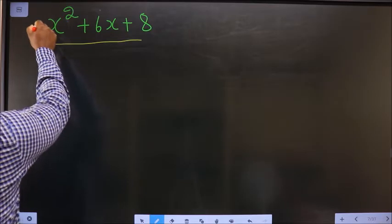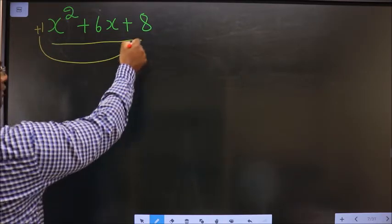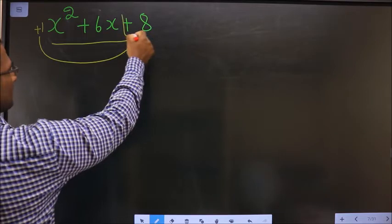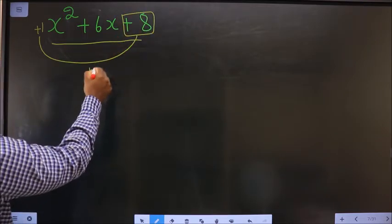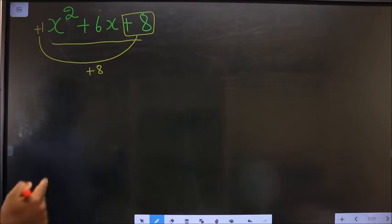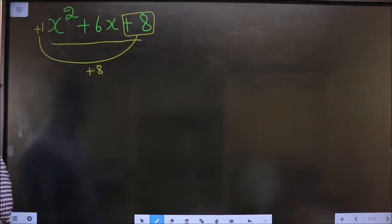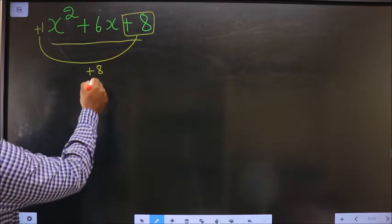Whatever number you have here should be multiplied to the constant, that is +8 in this case. So 1 into +8 is +8. Clear with step 1? Next step: now you should look out for two numbers.